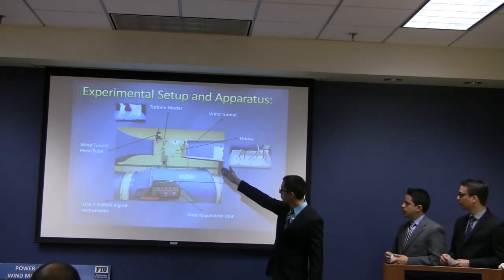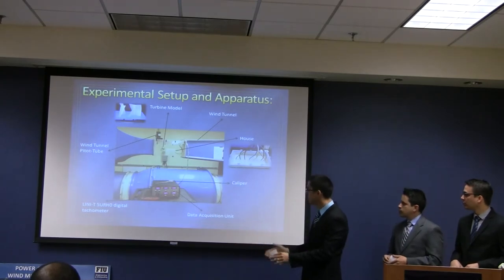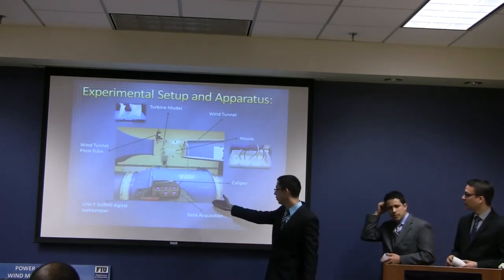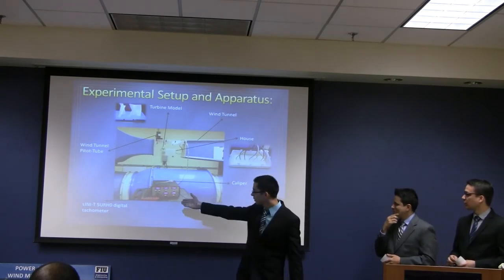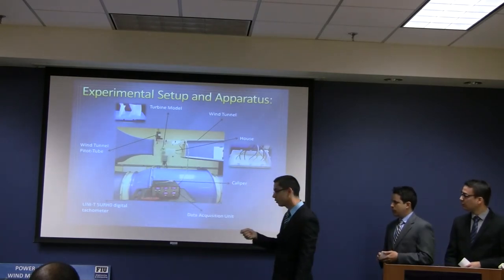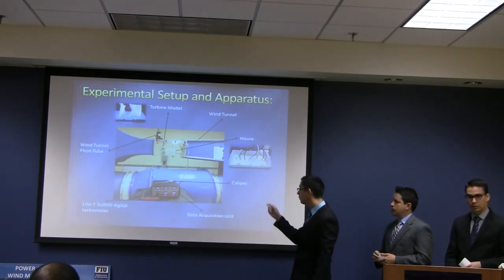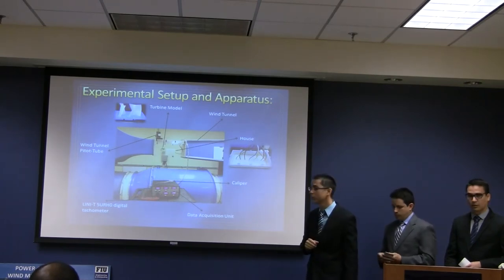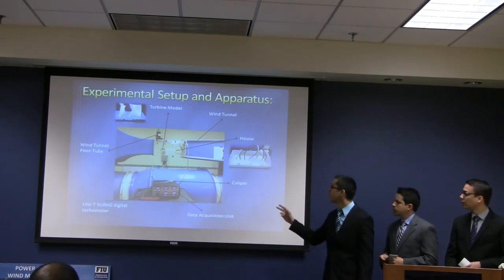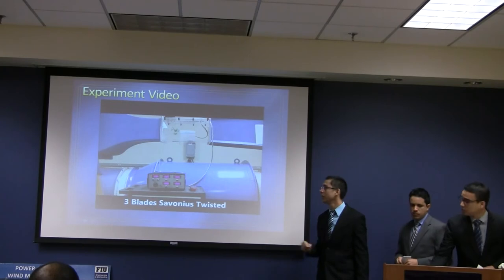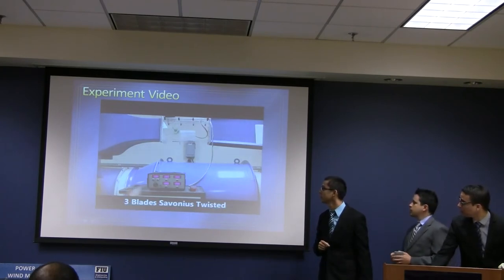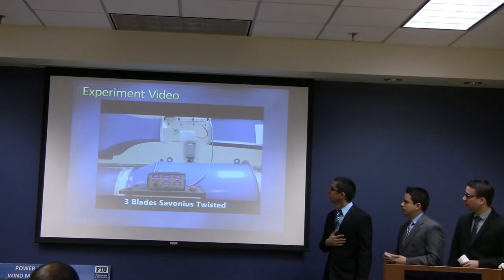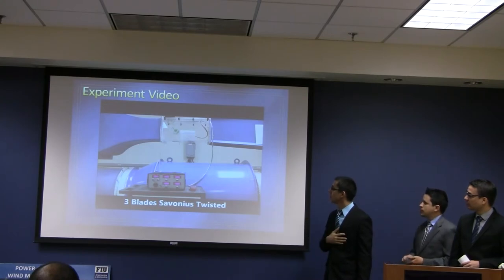We used a caliper to properly place the turbine and ensure the distance set in ANSYS matches the physical setup. We also used a data acquisition unit to get reading values, a digital tachometer to measure rotational speed of the turbine, and calculated wind speed through a Pitot tube from the wind tunnel. Here is a short video of one of our experimental tests — you can see how the turbine is rotating.